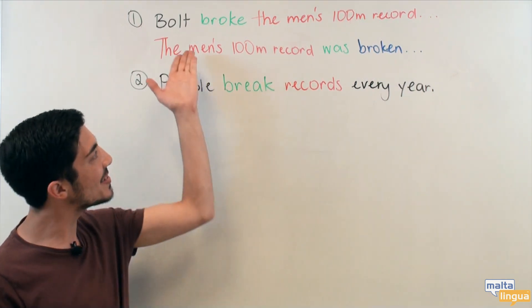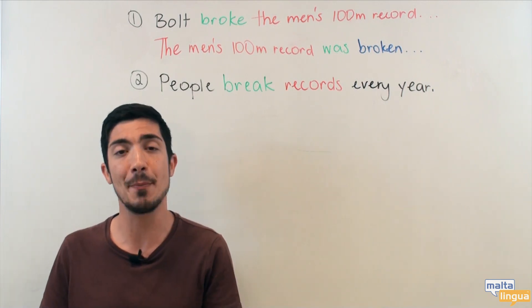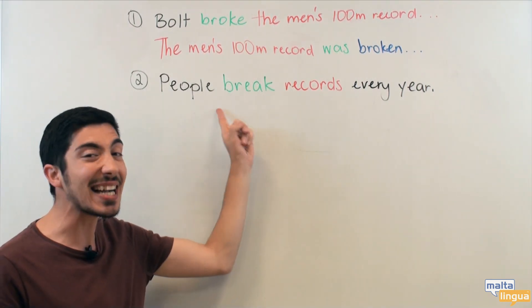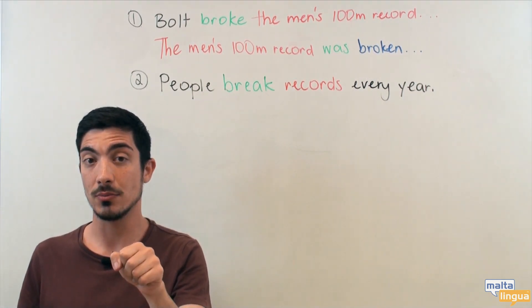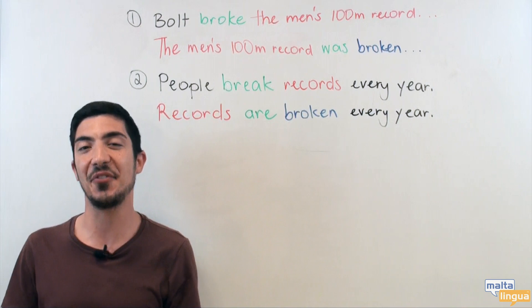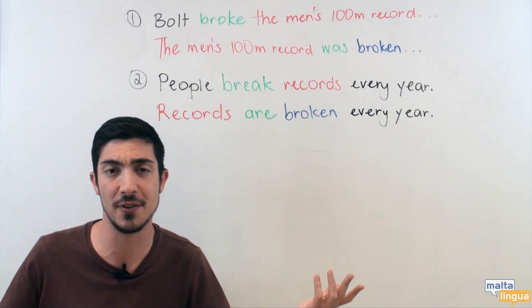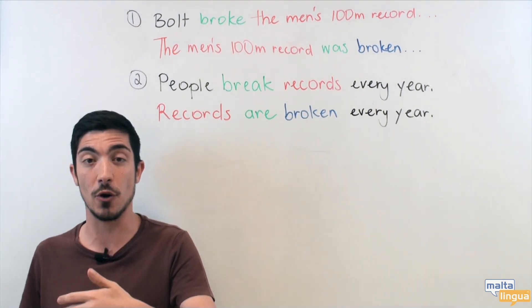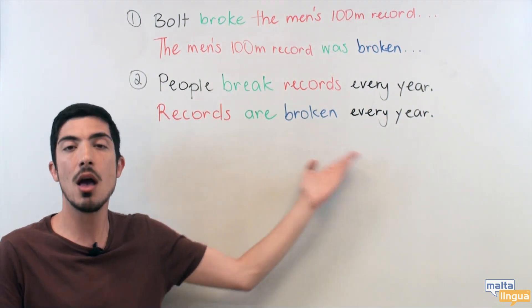Now that we've looked at the past simple passive, let's look at some other forms commonly used. Here's the active sentence again. Can you remember the passive sentence we used in the video? The answer is: 'Records are broken every year.' I did the exact same thing — I looked at the verb 'break'. It's in the present simple form, so: records 'are broken' every year.